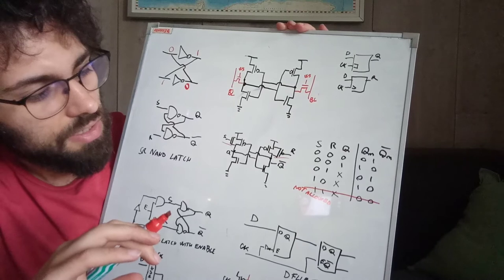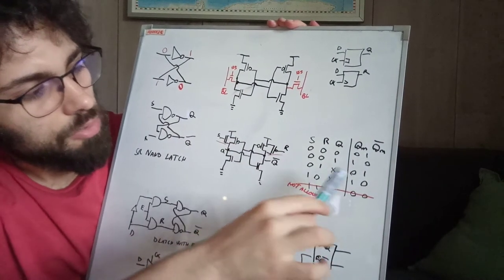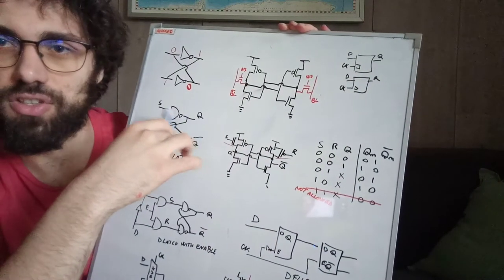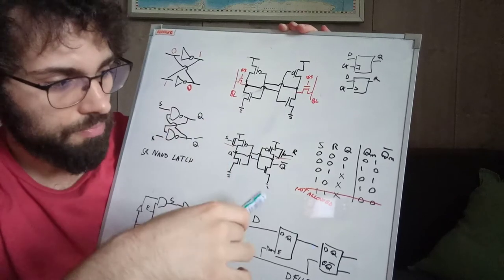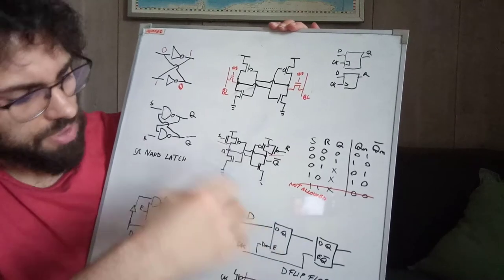So the idea is that if you set, then you propagate it to the output. And if you reset, you set the value of this circuit to zero, so Q to zero. Here is the truth table shown.